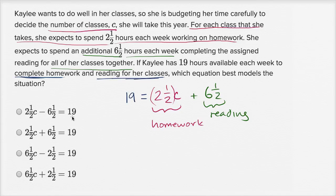So which of these choices are what I just wrote over here? So let's see, they have the 19 on the other side, but let's see, they have 2½C minus 6½. No, that's not this right over here. 2½C plus 6½, yep, that's what we have over here, is equal to 19.